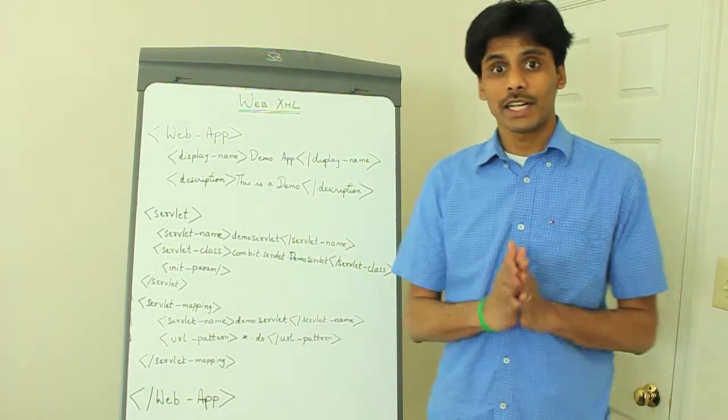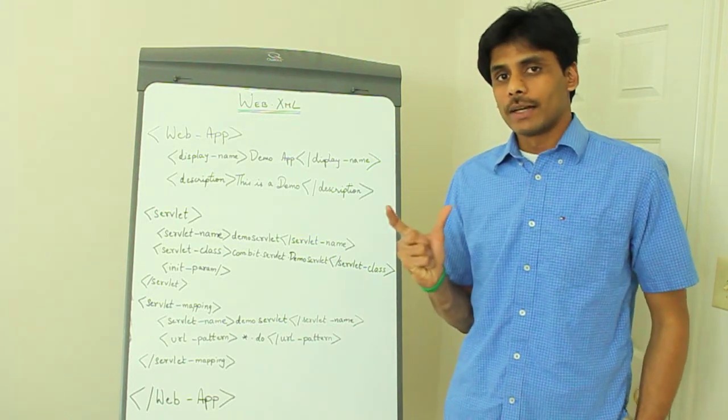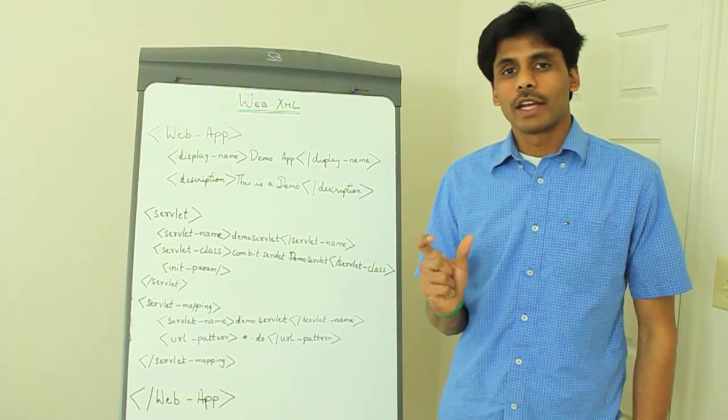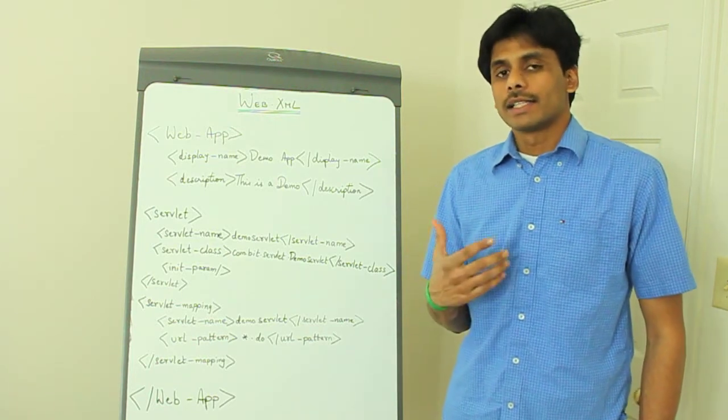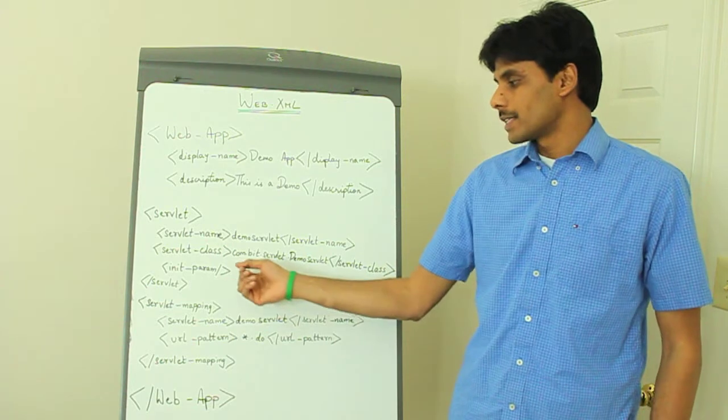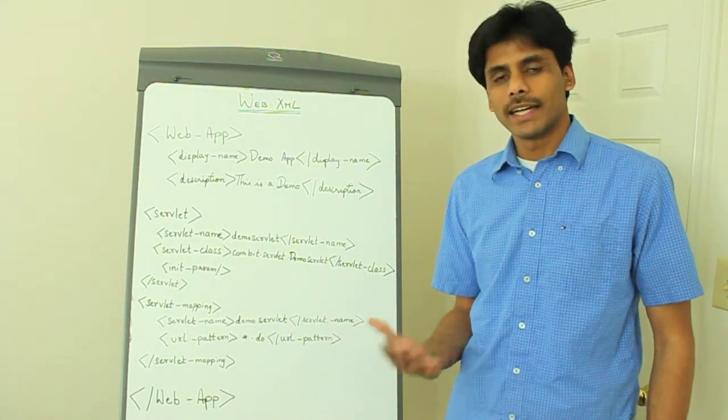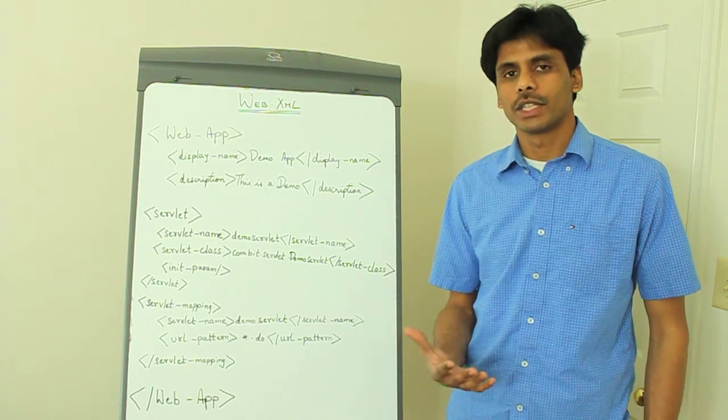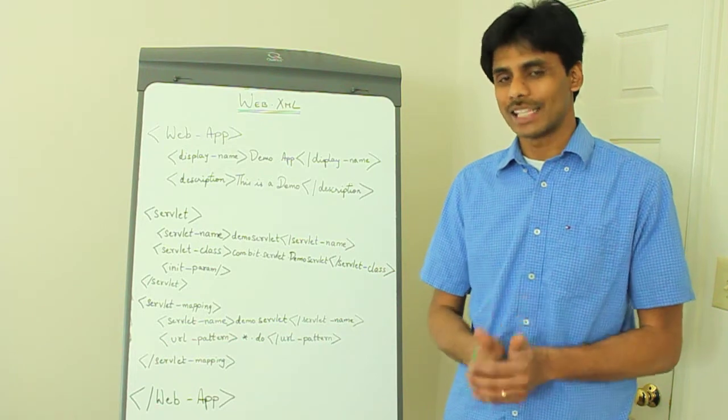And in case of struts framework, when we move to struts you will know but the action servlet needs a struts-config.xml, the path to struts-config.xml file as initialization parameter and we will be passing it in right here. And this could also be as simple as a database name or any other configuration information that your servlet needs to run and do the job it has to.